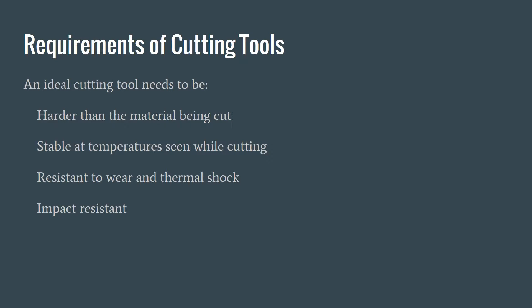First off, the cutting tool needs to be harder than the material we're cutting. It's got to be able to withstand the heat the cutting produces and it can't wear out too fast. No cutting tools will have all these properties — there will be compromises made between them depending on the material used, which depends on the application it's being used in. Cost is also a factor to be considered.